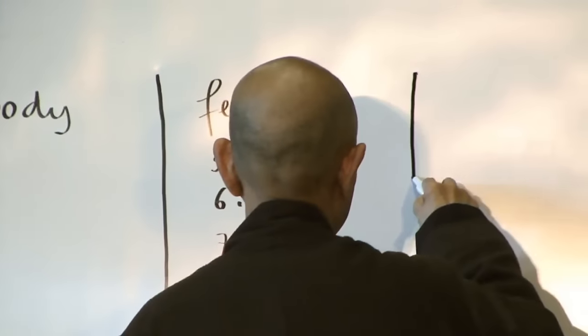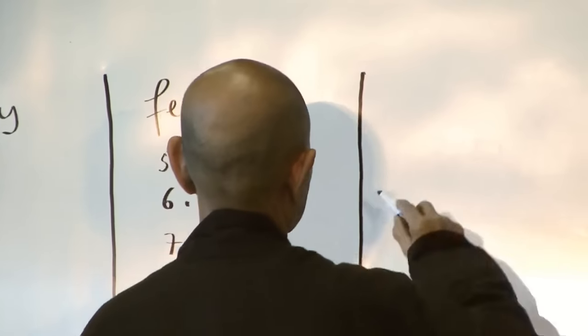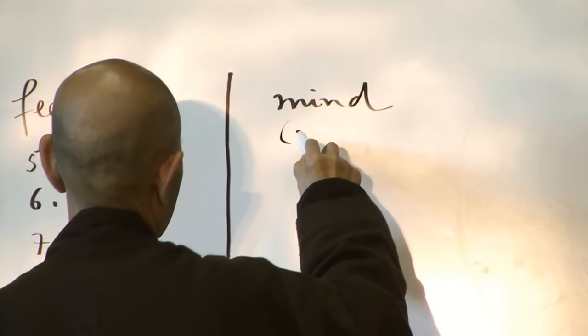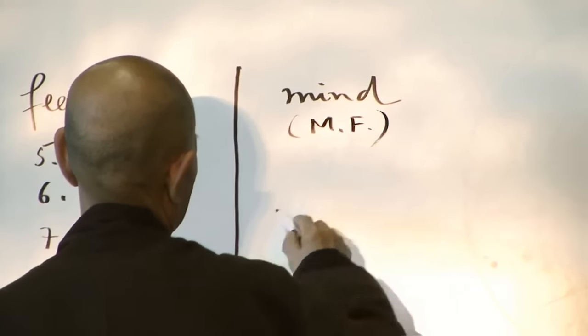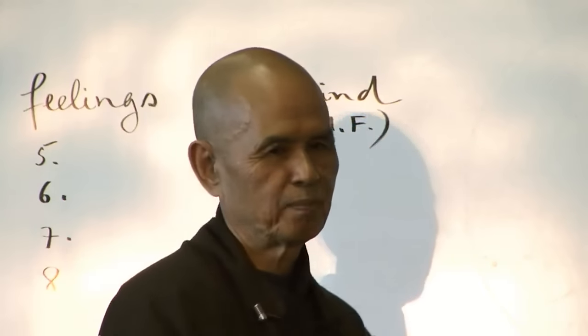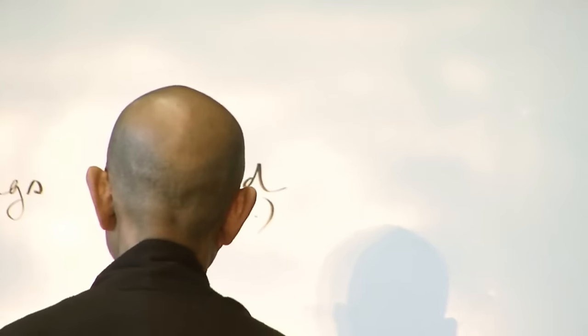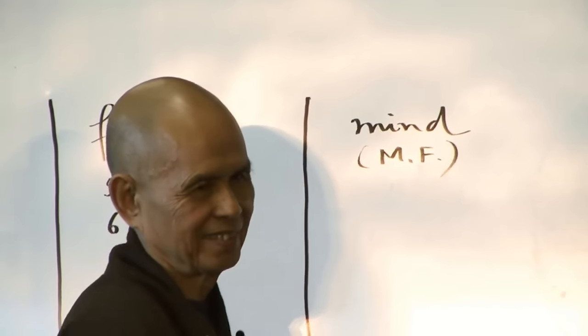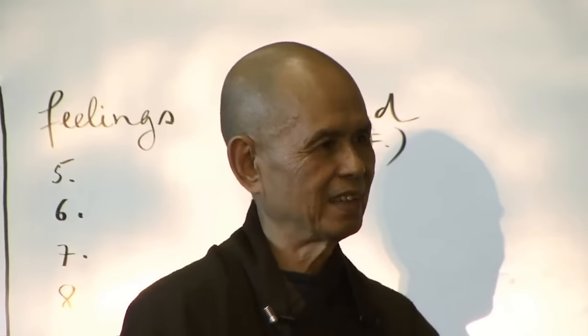The third object of our mindfulness is the mind. The mind means the mental formations. The mind is kind of a river, and the mental formations are drops of water succeeding each other, making a stream. So to meditate means to sit on the river of the mind and recognize every mental formation as it arises.